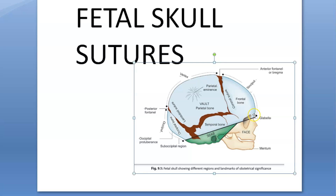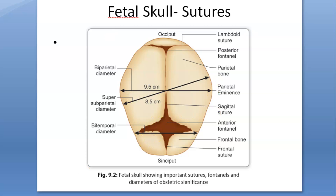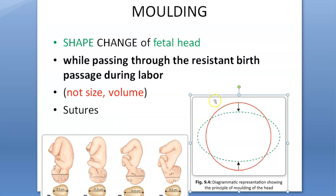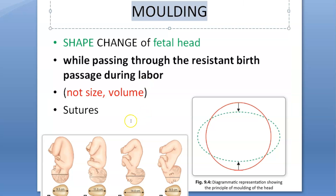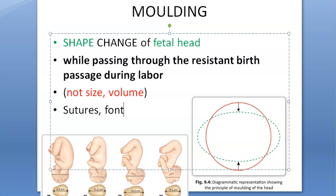Let me show you all the sutures again: the sagittal suture, frontal suture, coronal suture, and lambdoid suture. And for the fontanels: the anterior fontanel, posterior fontanel, and the sagittal fontanel. Basically, all these help in the passage of the fetus through the maternal pelvis. This is molding - the sutures and fontanels allow the baby to change its shape, not its size.